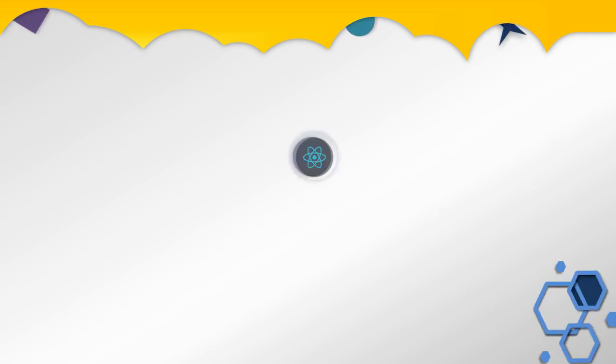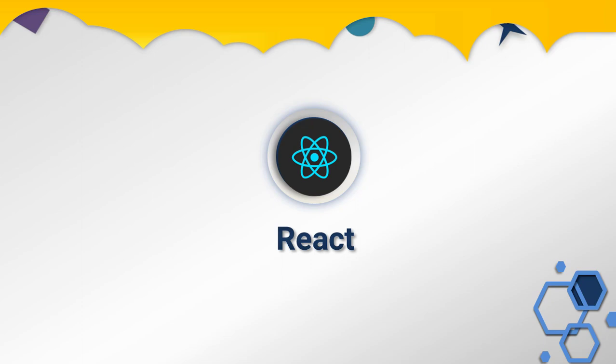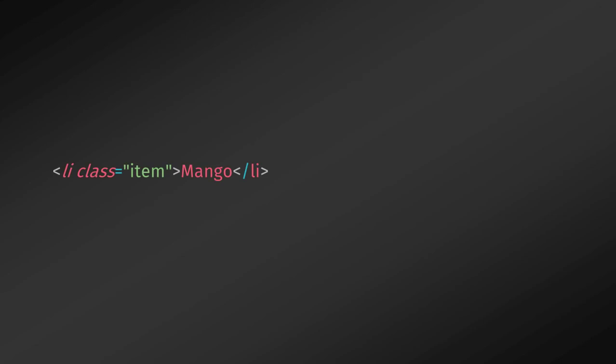Welcome back to the React course. In this lecture, we are working with JSX properties. When you create an element, you can specify properties to that element using key-value pairs. The properties are just like HTML attributes — you can specify key and value pairs inside the JSX tag to define them.